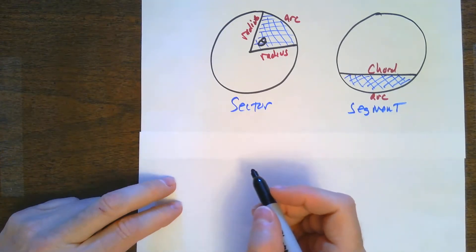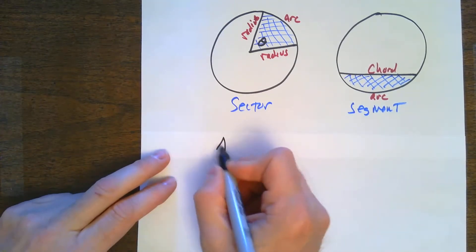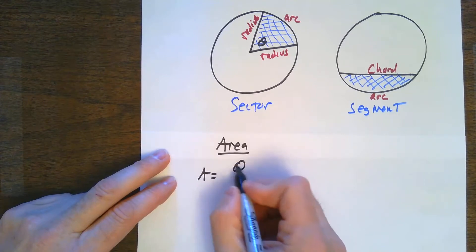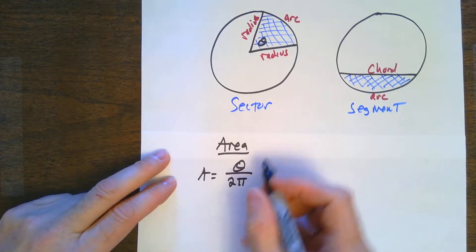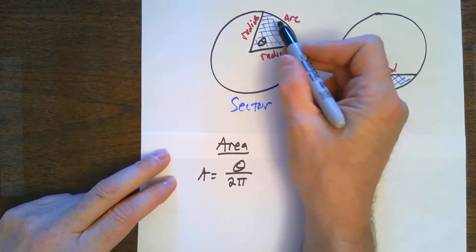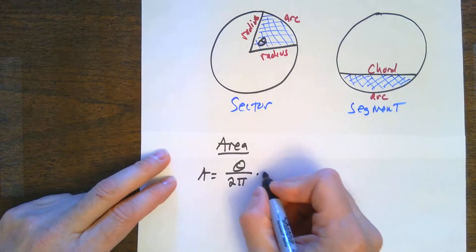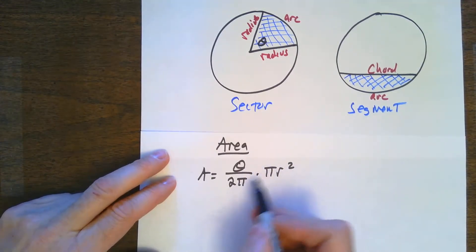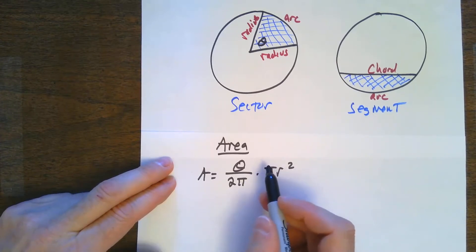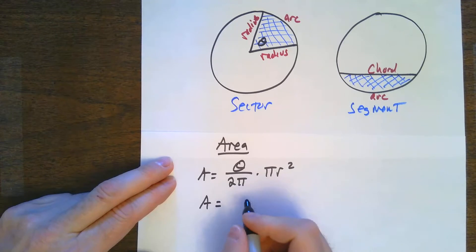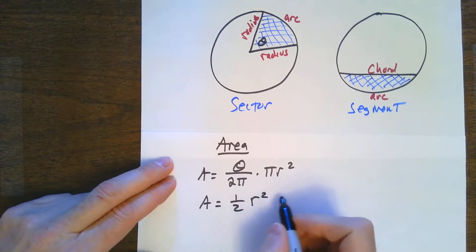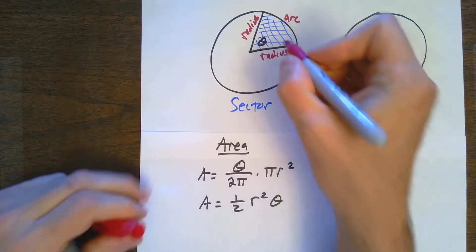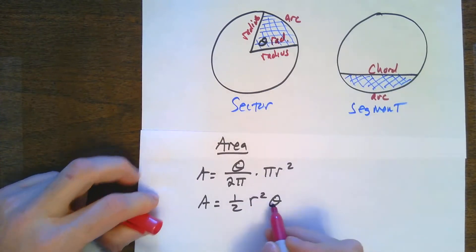The area of a sector can be found by the angle divided by 2π, which gives the portion, times πr². If I simplify, the π's cancel, and the area formula simplifies to one half r² times theta. The angle has to be in radians — this angle has to be in radians.